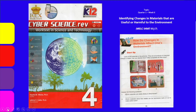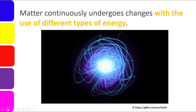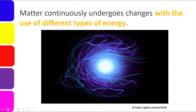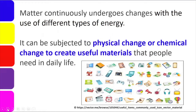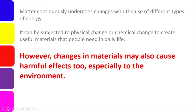But to enrich further our contents, I took some information from other resources like textbooks and online sources so we go beyond the contents of our module. Matter continuously undergoes changes with the use of different types of energy. All changes in things, including our bodies, involves the use of different types of energies. It can be subjected to physical change or chemical change, depending on what kind of change will happen, to create useful materials that people need in daily life. However, changes in materials may also cause harmful effects, especially to the environment. Not all changes are good.